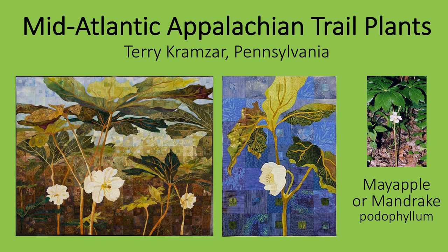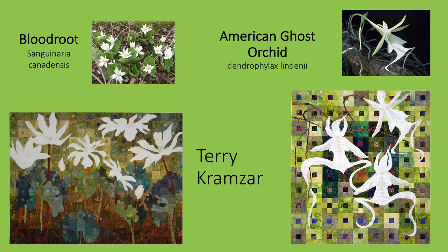Terri Kramzer is inspired not just by spring, but by plants she finds in a specific place — her walks along the Mid-Atlantic Appalachian Trail. These are two quilts she has made depicting the mayapple or wild mandrake plant. She has beautifully captured its twin umbrella-like leaves and solitary flowers. Note the background, which is entirely squares with a second small square in the center — the result is a complexity of color and pattern like that we find in nature. These are two other quilts by Kramzer. The left-hand quilt depicting bloodroot was likely also inspired by her walks along the Appalachian Trail — she has nicely captured the lobed basal leaves, thick stems, and many-petaled white flowers. The quilt on the right depicts the American ghost orchid, a rare flower native to Florida and Cuba, sometimes also called a frog flower. Both the quilt and the plant are quite remarkable.